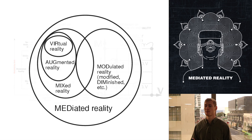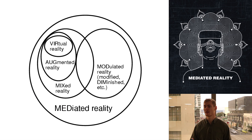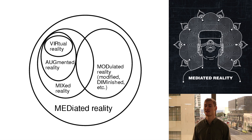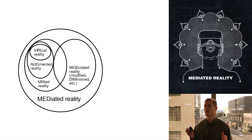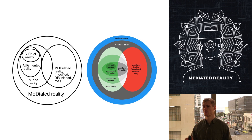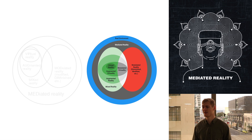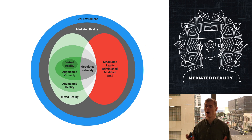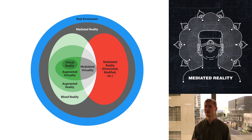Mann's Venn diagram did a much better job of visually representing mediated reality than his taxonomy of reality, virtual reality, and mediality. However, it still missed out a few important details, including the representation of where the real environment sits in relation to mediated reality. He also left out augmented virtuality and modulated virtuality. Consequently, I have developed a Venn diagram to more accurately represent our current understanding of mediated reality.